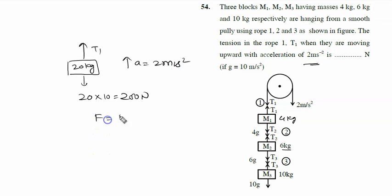Now we will apply F equals mass into acceleration. Net force in the upward direction is given by T1 minus 200, mass is 20, acceleration is 2. So 20 times 2 is 40, plus 200 equals 240. T1 is given by 240 newton. The right answer of the problem is 240 newton.